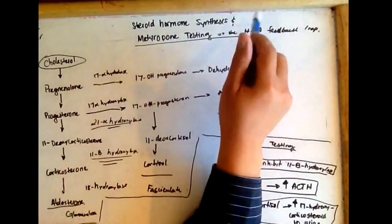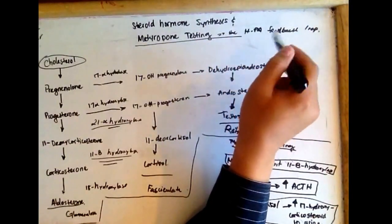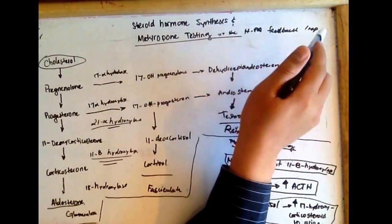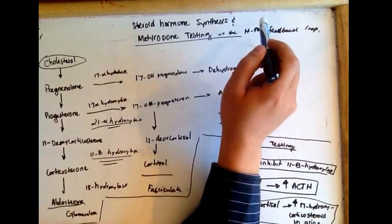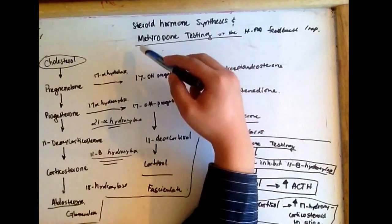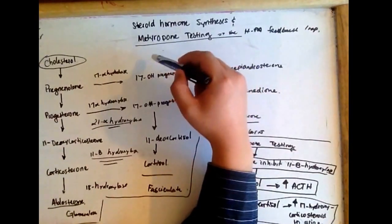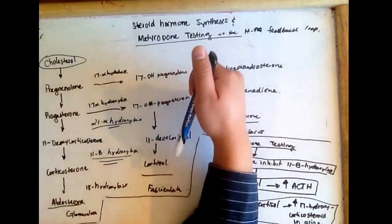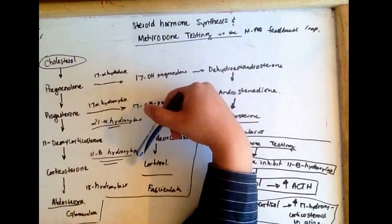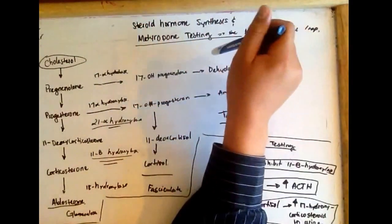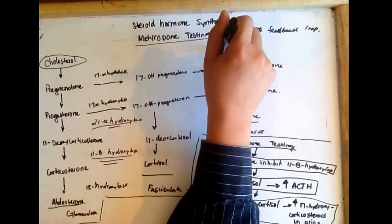Steroid hormone synthesis and metyrapone testing assess whether the hypothalamic-pituitary-adrenal feedback loop functions normally. The steroid hormone synthesis pathway requires three important enzymes: first, 17-alpha-hydroxylase; second, 21-alpha-hydroxylase; and third, 11-beta-hydroxylase. Steroid hormones are synthesized in the adrenal cortex.